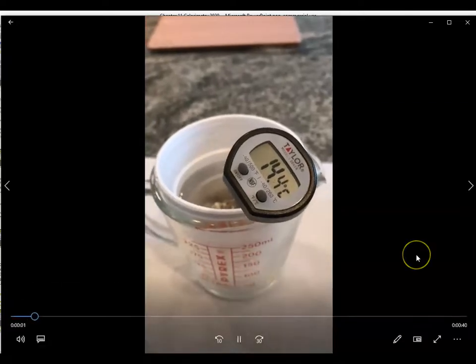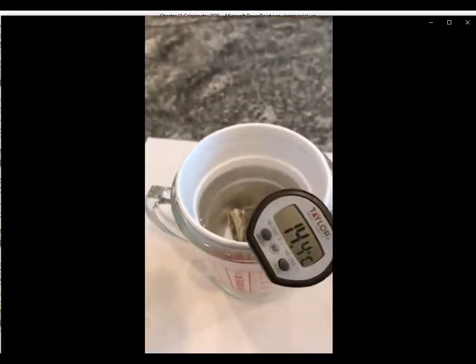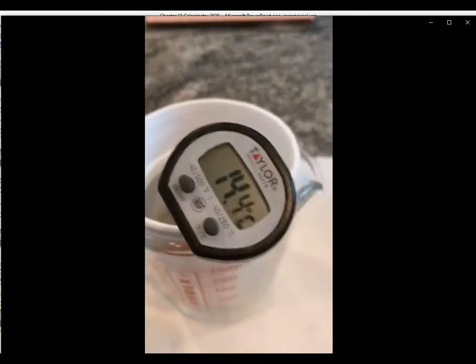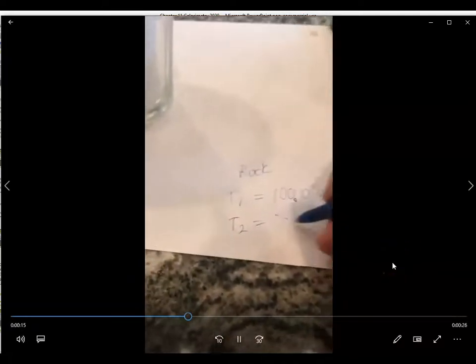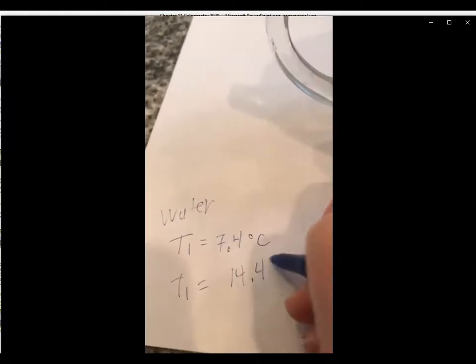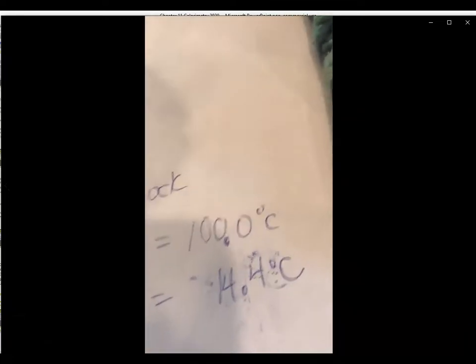With the help of a timer, after 5 minutes the final temperature of the water and rock mixture — notice the rock is still in there — is 14.4 degrees C. They started at different temperatures: the water started at 7.4 degrees C and the rock started at 100 degrees C, but they both ended at the same temperature because they're in the same cup of water.